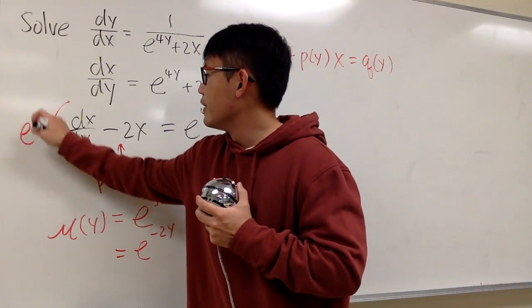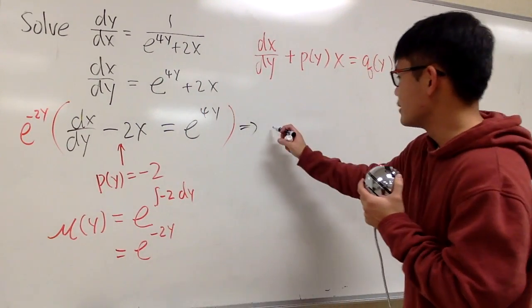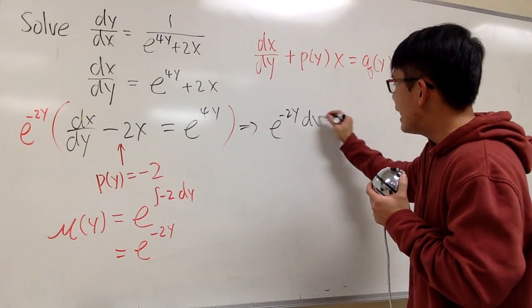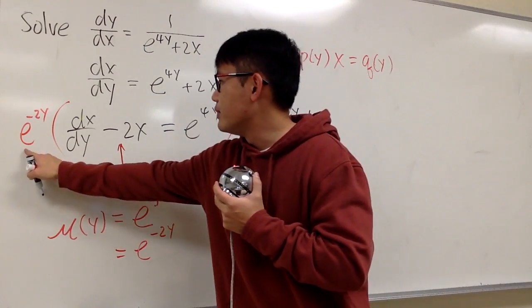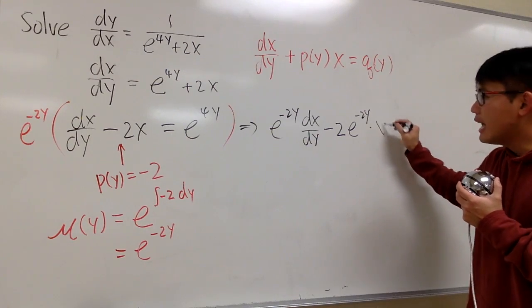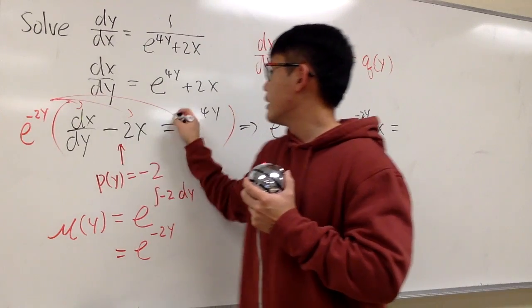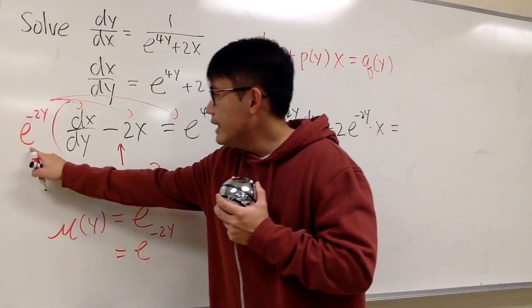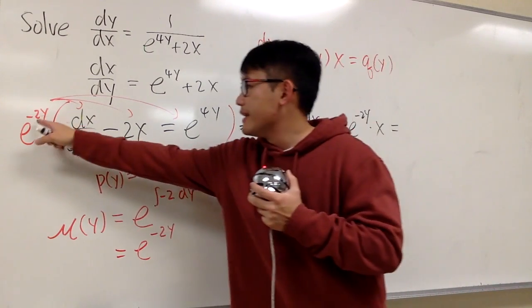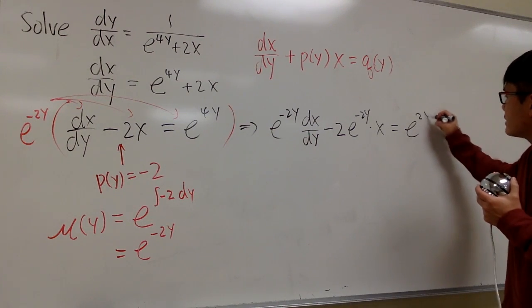Multiply everything by e^(-2y), and this is what we are going to get. We have this times that, right? So I'm going to speed this out a little bit. e^(-2y) times dx/dy, and here we have this times that. Let me write it down as -2e^(-2y) times x. At the end, don't forget, we distribute, right? Lastly, e^(-2y) times e^(4y), we add the exponents. Negative 2y plus 4y is positive 2y. So this is e^(2y).